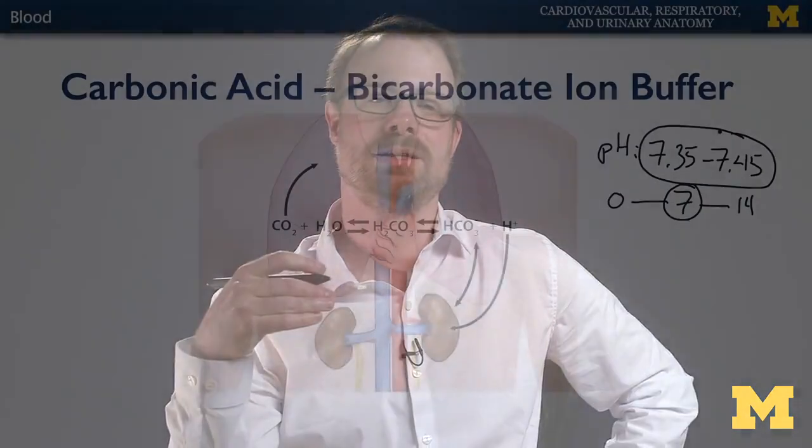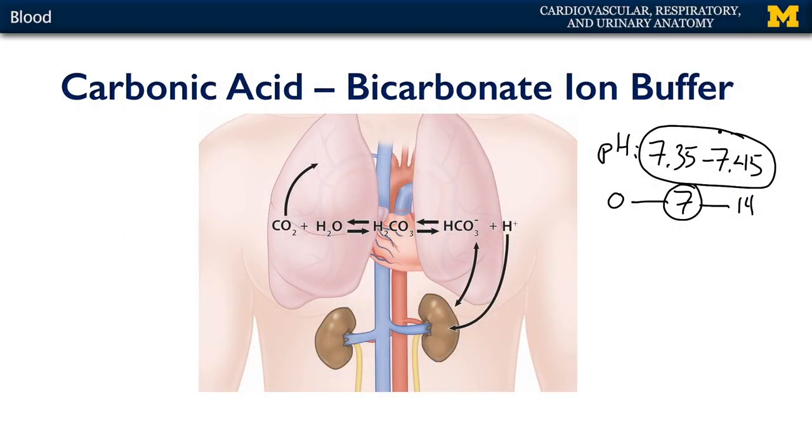If we go below 7.35 for an extended period of time, this is a condition known as acidemia, which can be harmful or even fatal. Likewise, if we go above 7.45 for any real amount of time, this is a condition known as alkalemia, and this can also be harmful or even fatal. Your blood therefore contains a mechanism called the carbonic acid bicarbonate ion buffer system.